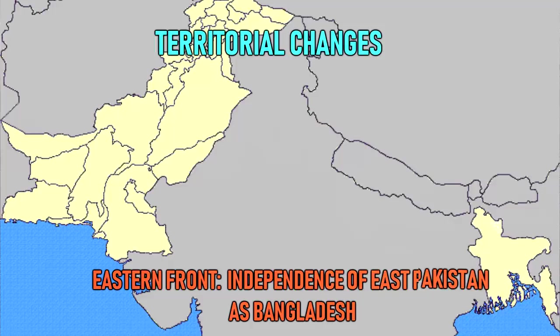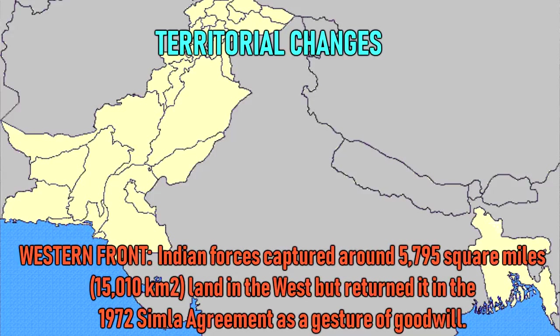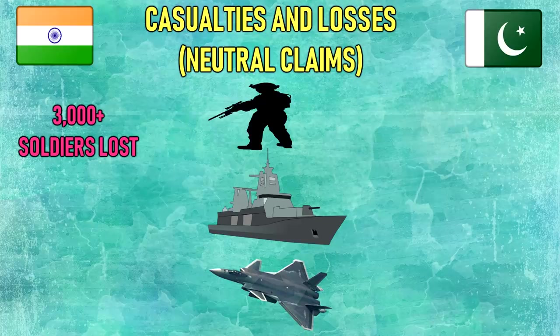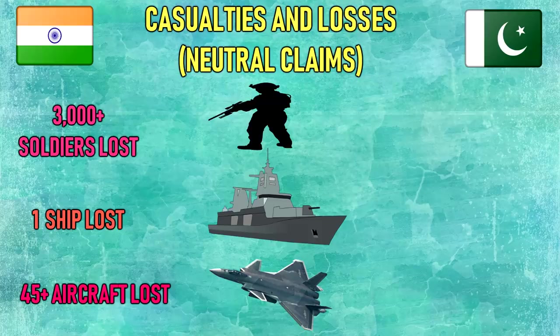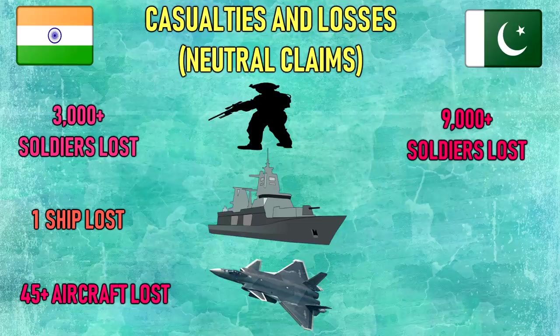Result: decisive Indian victory. Territorial changes — Eastern Front: independence of East Pakistan as Bangladesh. Western Front: Indian forces captured around 5,795 square miles of land in the west but returned it in the 1972 Simla Agreement as a gesture of goodwill. Casualties and losses: India — 3,000 plus soldiers killed, one naval ship lost, 45 aircraft lost; Pakistan — 9,000 plus soldiers killed, 90,000 plus soldiers captured, seven naval ships lost, 75 aircraft lost.